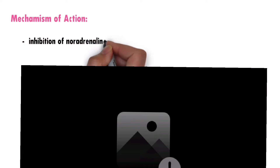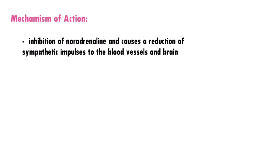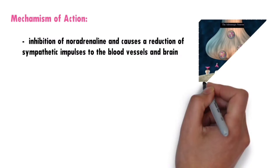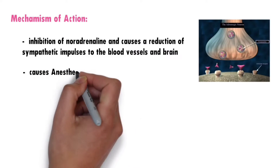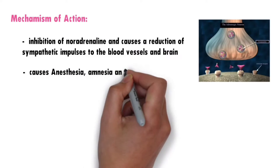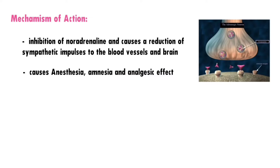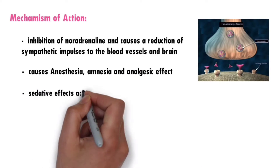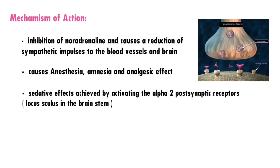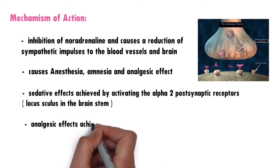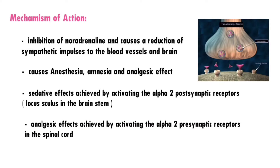This alpha-2 receptor action involves inhibition of noradrenaline and causes a reduction of sympathetic impulses to the blood vessels and brain. It causes anesthesia, amnesia, and analgesic effects. The sedative effects are achieved by activating the alpha-2 postsynaptic receptors located in the locus coeruleus in the brain stem. The analgesic effects are achieved by activating the alpha-2 presynaptic receptors in the spinal cord.